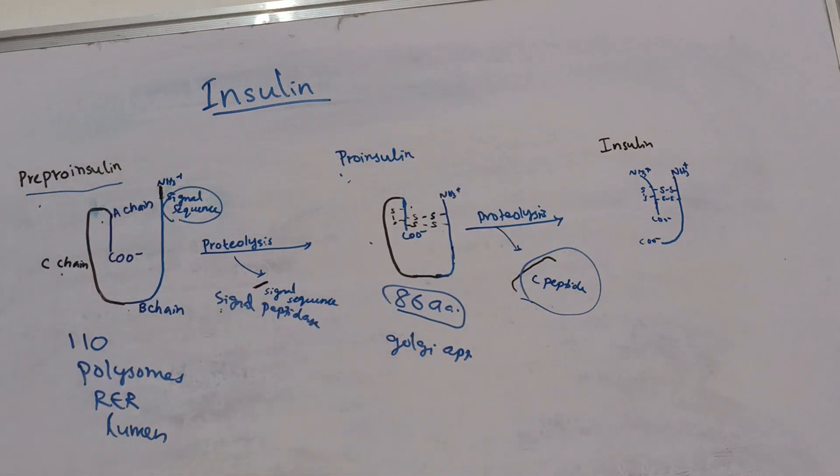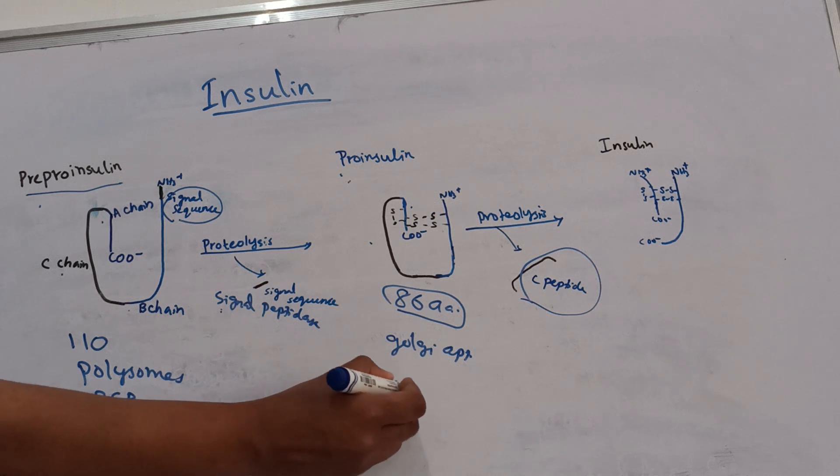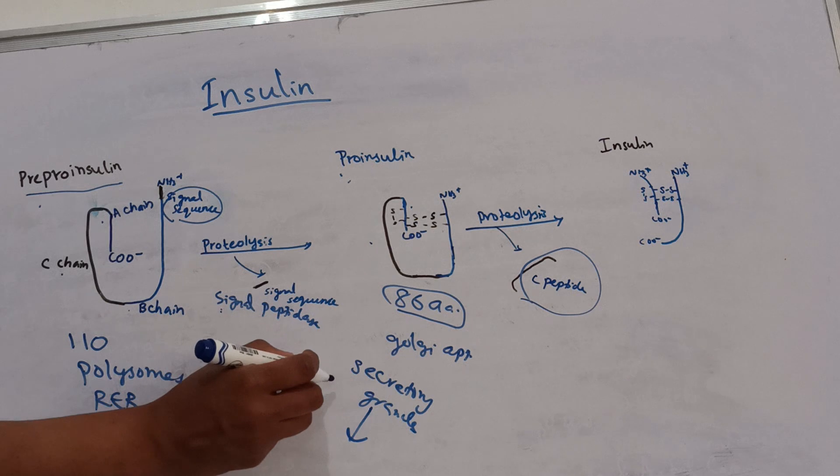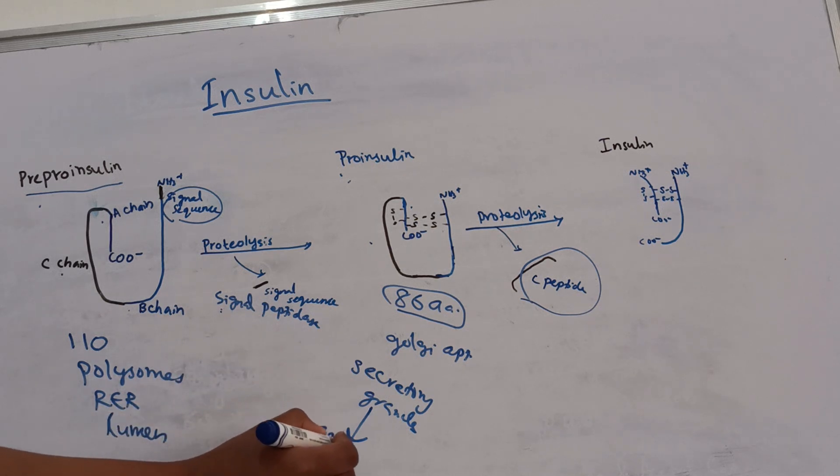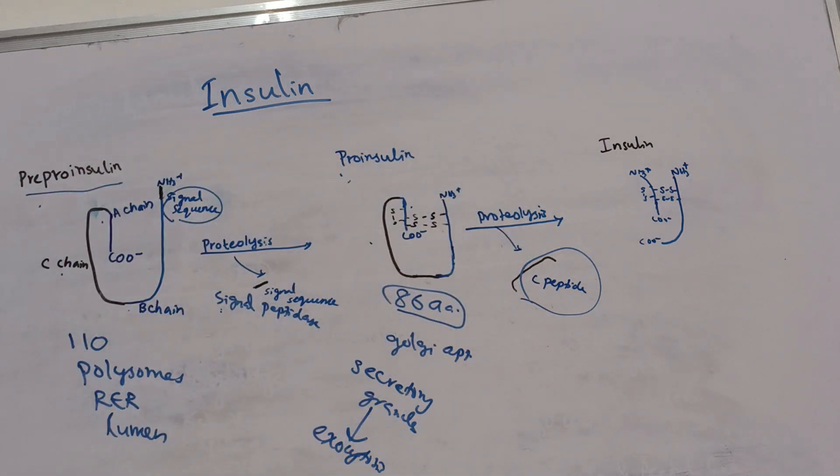Then, insulin and C peptide are packaged into secretory granules. These granules are secreted by exocytosis and release this insulin and C peptide in equimolar amounts.